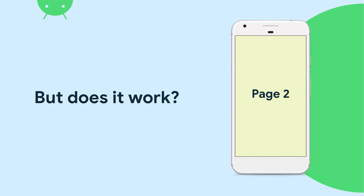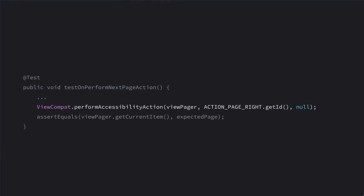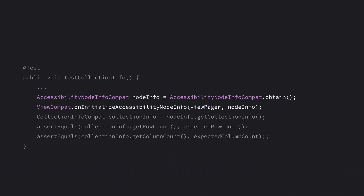The last thing I want to touch on is testing. It's surprisingly easy to ship bugs with accessibility, especially because accessibility is not a code path that's exercised often. A couple of obvious ways to test: first, just open the accessibility services yourself — run TalkBack, run Switch Access, see how it works. This is a good way to find subtle bugs that seem insignificant in code but turn out to be very frustrating for users. The other is unit testing or automation testing, which typically takes two forms: performing an action on a view and checking the resulting state, or creating state on a view and verifying that the accessibility node info reflects that view correctly.